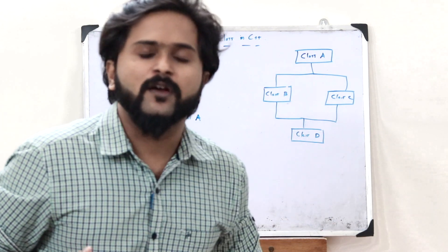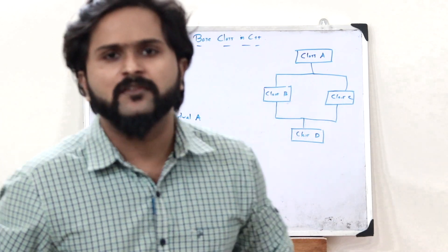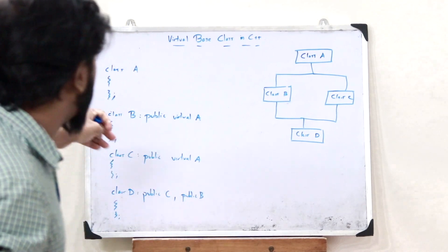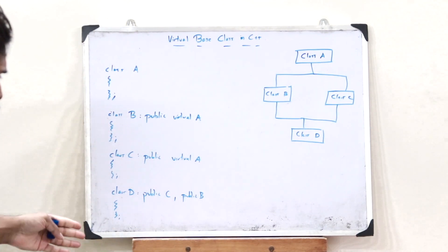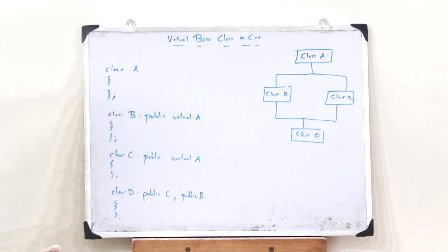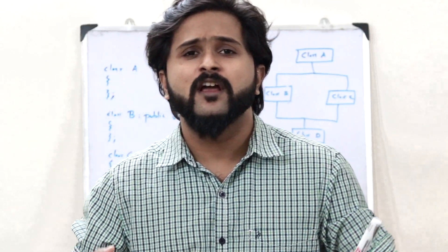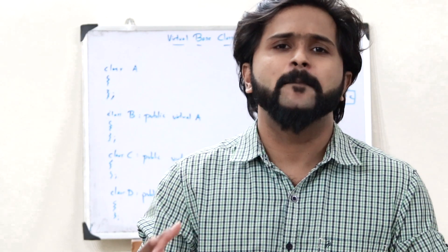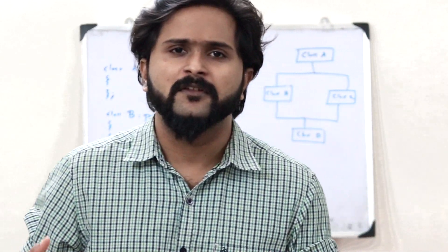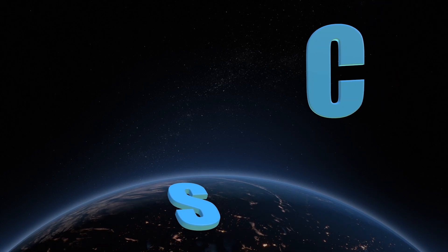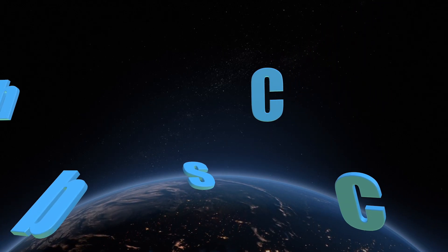That is when we use a virtual base class — so that we won't be thrown an error while accessing data members or member functions of class A when it is inherited through two classes. I hope you now have a clear understanding of what a virtual base class is in C++.